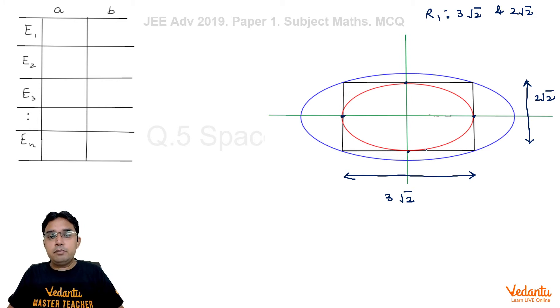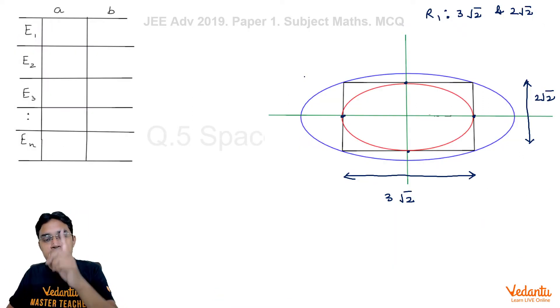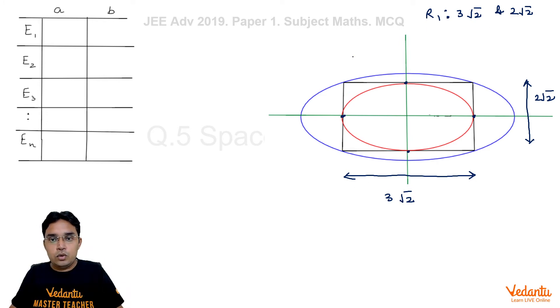This maximum area will be possible only if this ellipse touches this R1 rectangle at x-axis and y-axis. Then only its major axis, minor axis will be maximum possible, its area will be maximum possible, and also all these ellipses are standard ones which means major axis along x-axis, minor axis is along y-axis. Now if this length of this rectangle are 3√2 and 2√2, then for this ellipse E2 you can see semi-major axis will be half of this 3√2. So we can write this as 3/√2. Similarly, semi-minor axis of this would be half of 2√2. I am writing this as 2/√2.